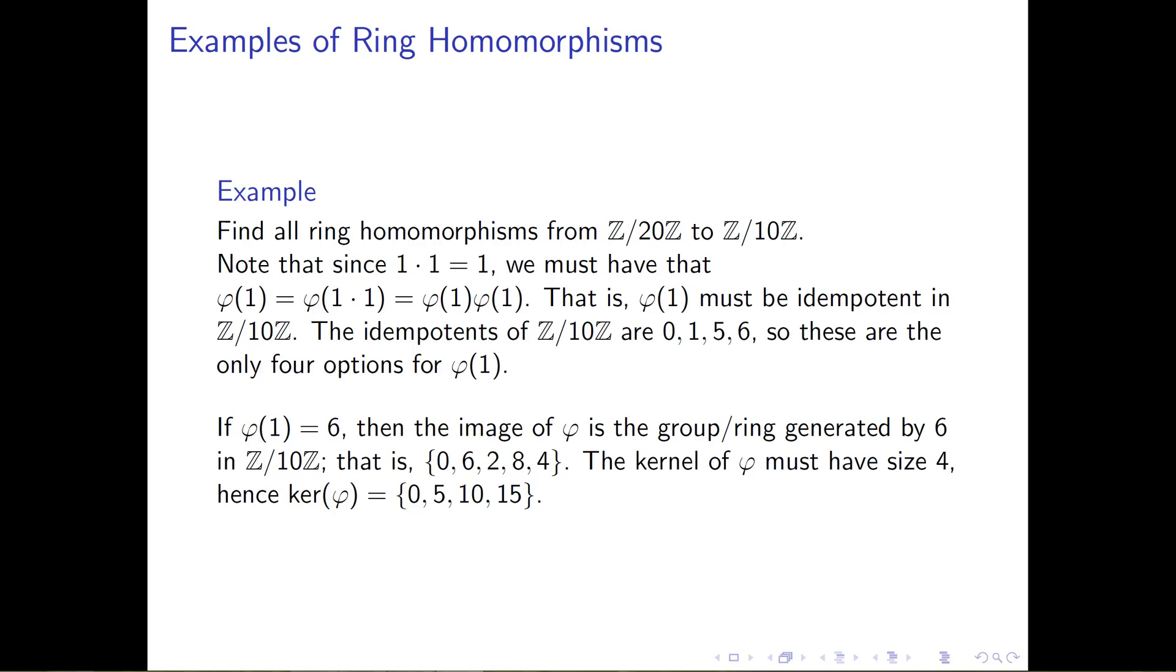Now, going back to just properties of group homomorphisms, we know that ℤ mod 20 is a ring of size 20. And we're saying that the image of this group homomorphism has size 5. And we know that the size of the original group divided by the size of the kernel is equal to the size of the image when we have a finite group.